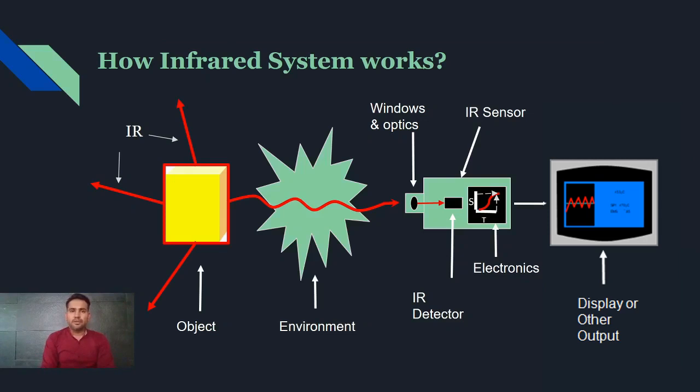How infrared system works? Consider object which is radiating the IR energy and passing through the environment and falling onto the optics of the IR sensor. Optics will accumulate those IR energy and pass it on to IR detector. IR detector will convert this IR energy into electrical signal and process through digital signal processing and display it in terms of temperature.